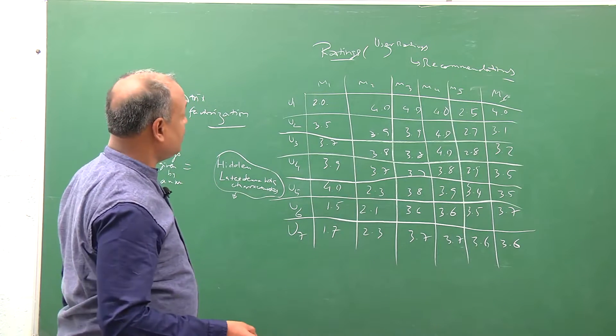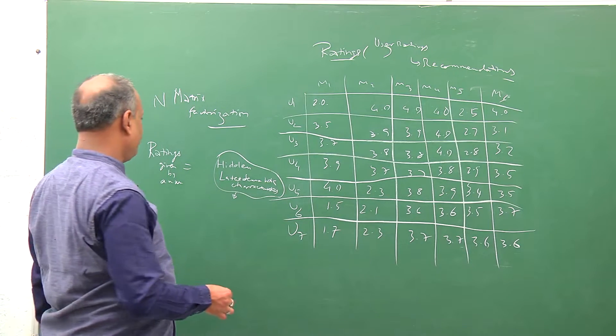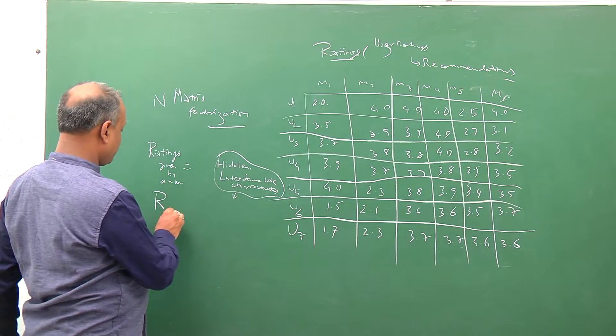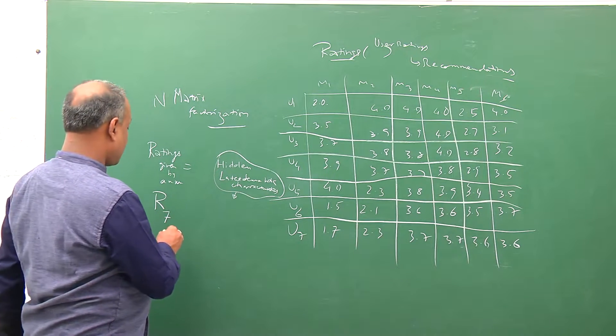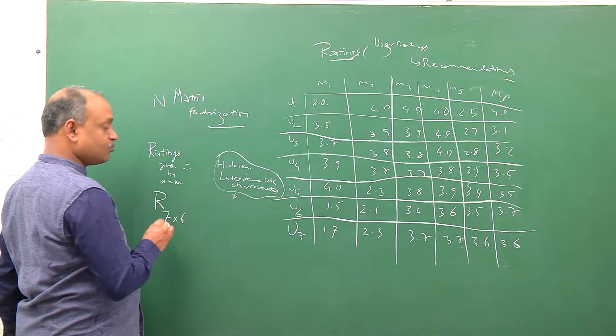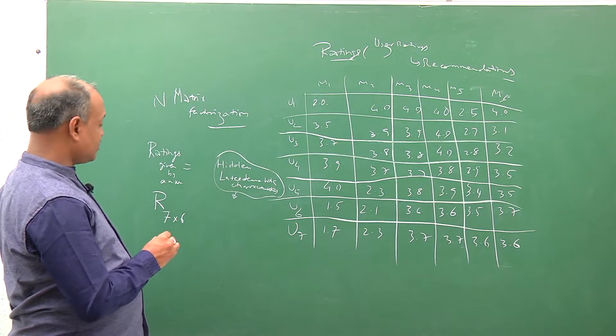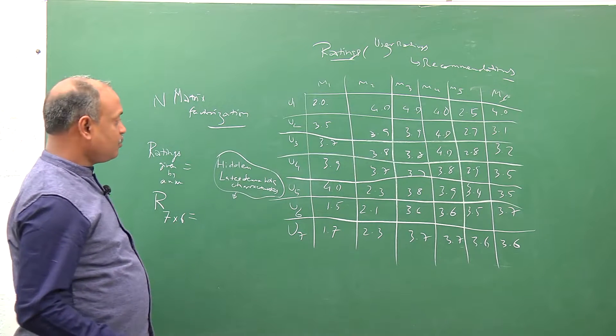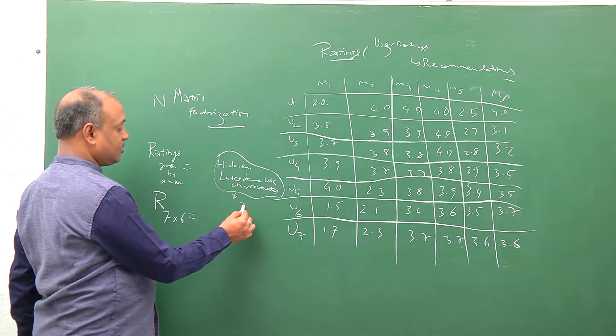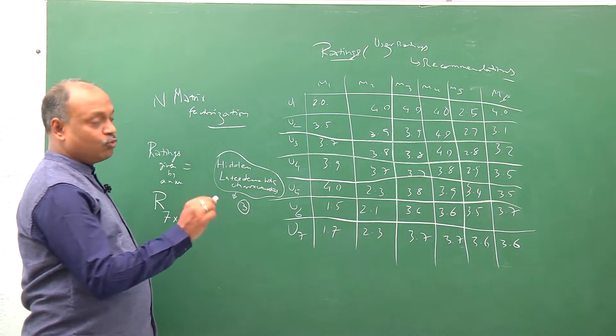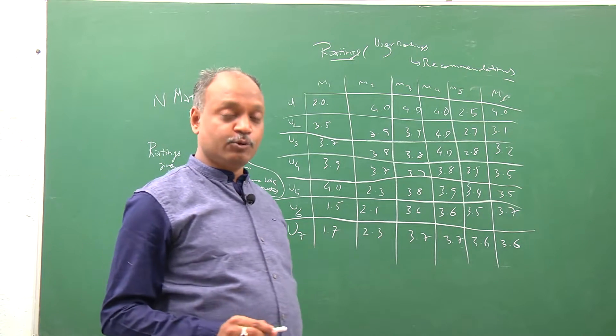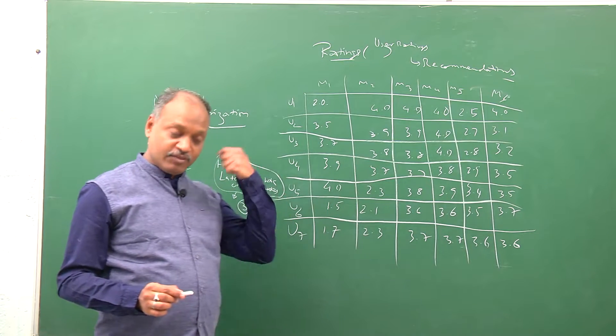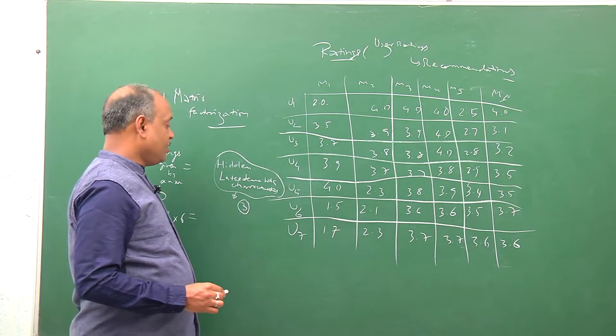This approach is done by viewing technically the ratings matrix. Let's assume here we are talking about seven users and six or seven movies. We assume that there are three broad hidden characteristics of the movies which is making the users use the characteristics to generate or give this subliminal rating.